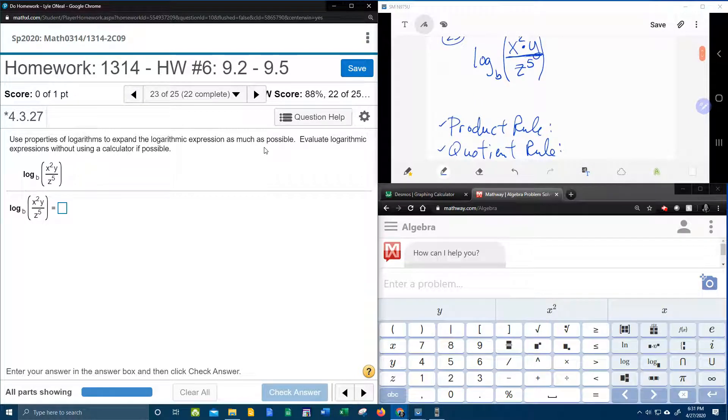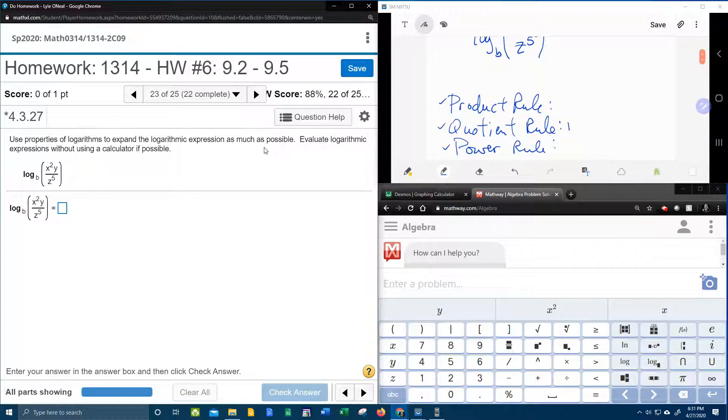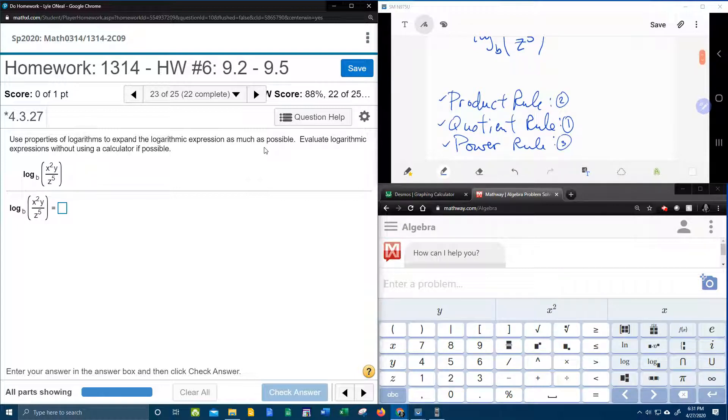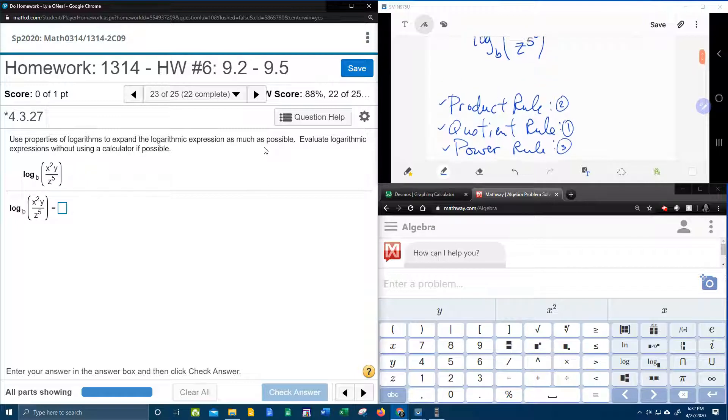Which one do I do first? Well, you've got to take the fraction first, okay? First, we're going to separate the quotient rule separates a fraction into subtraction. The product rule separates multiplication into addition. And then the last thing we're going to do is we're going to bring down the powers.